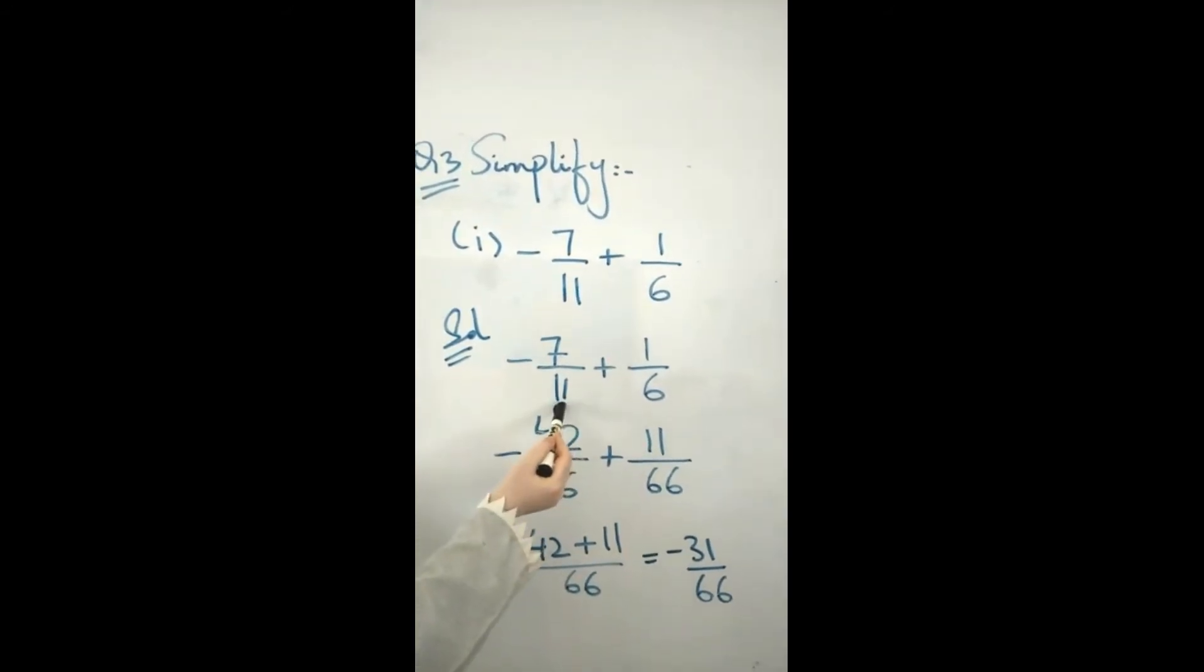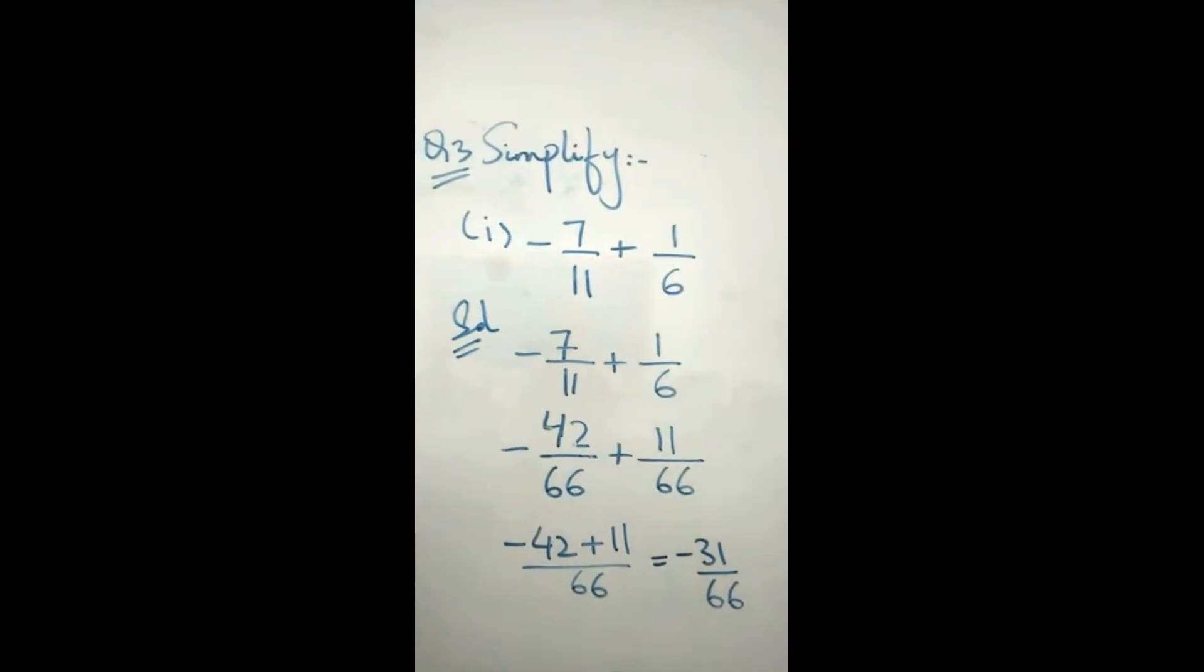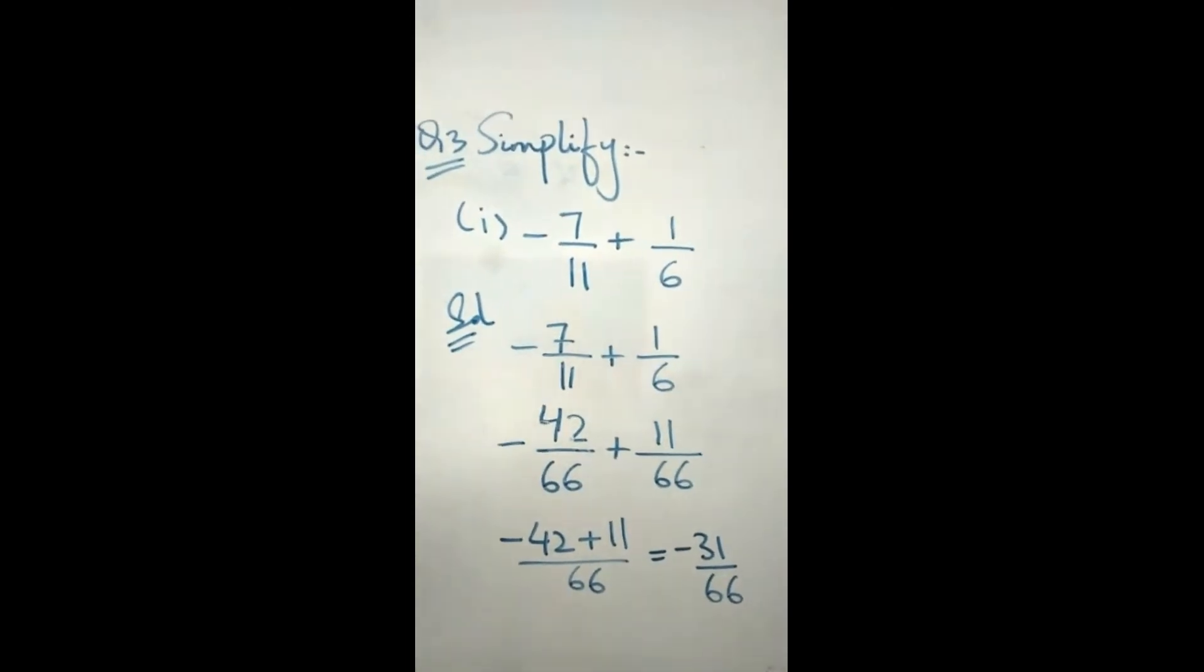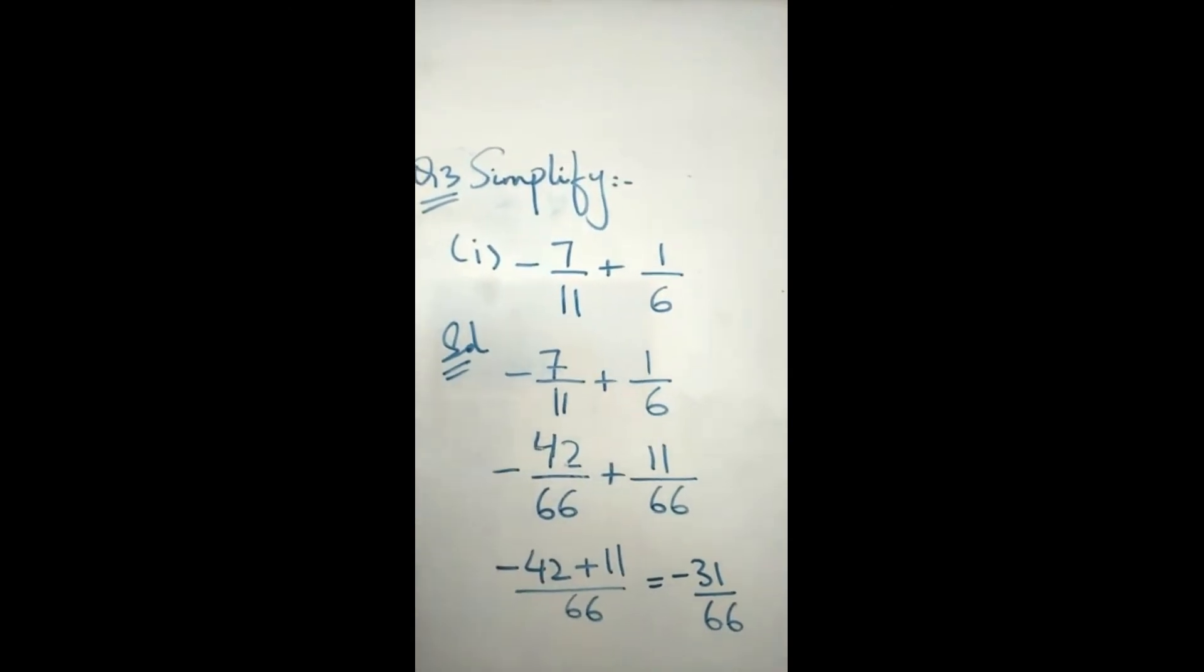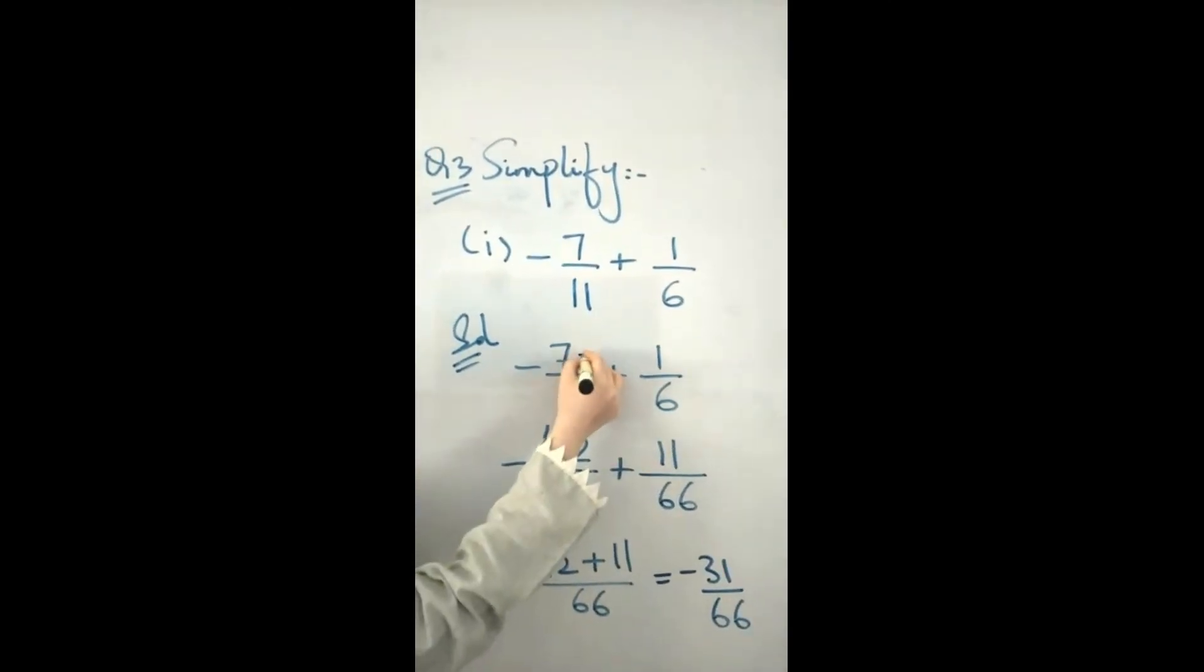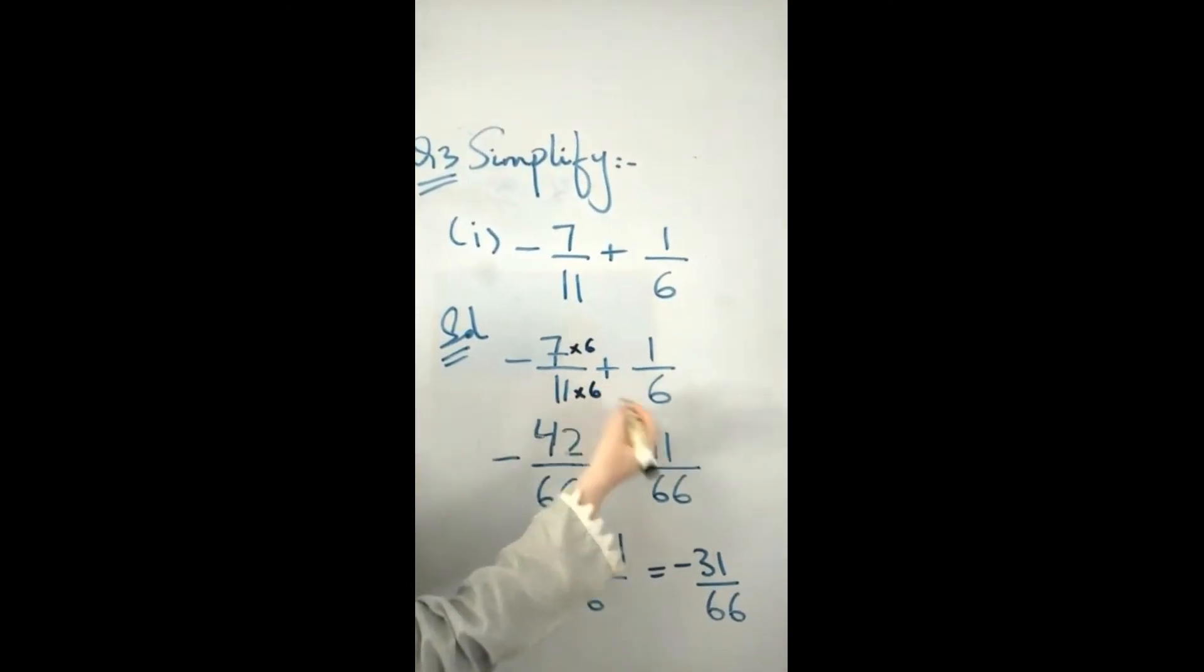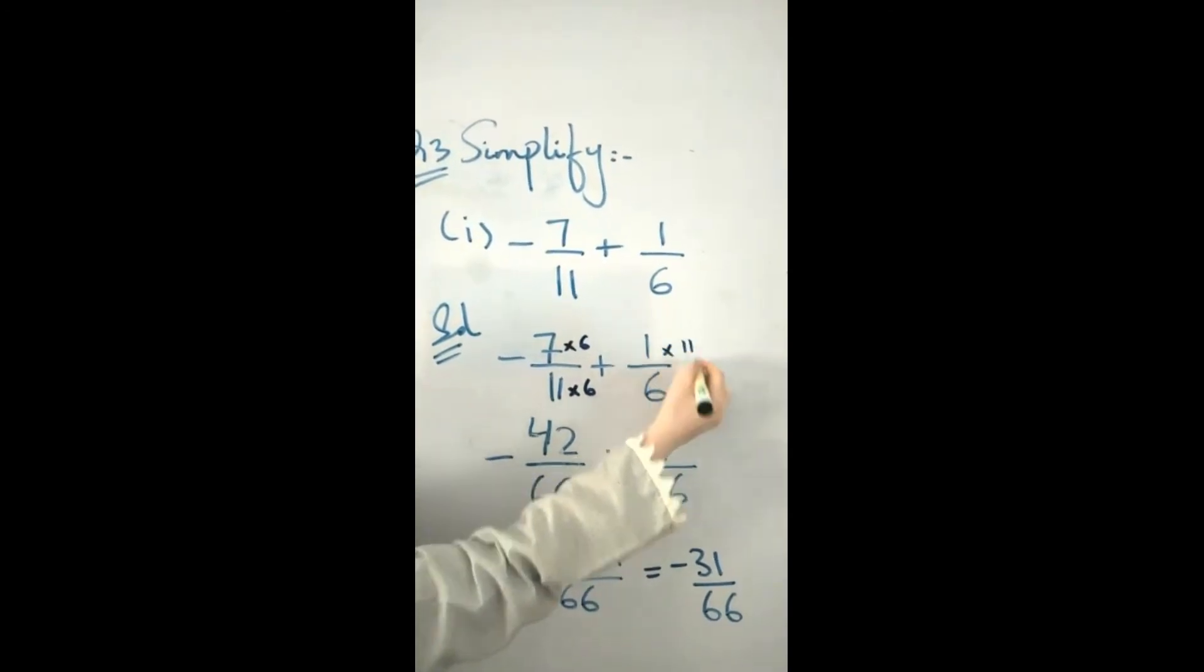-7/11 has 11 as the denominator, and 1/6 has 6 as the denominator. You know how to make the denominators the same. I will multiply the first term by 6 and the second number by 11.